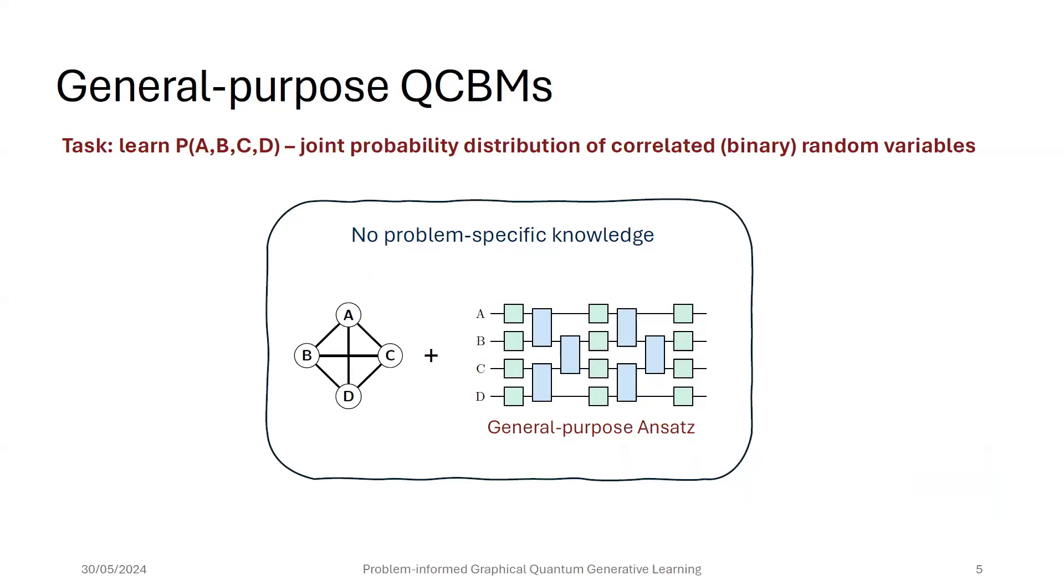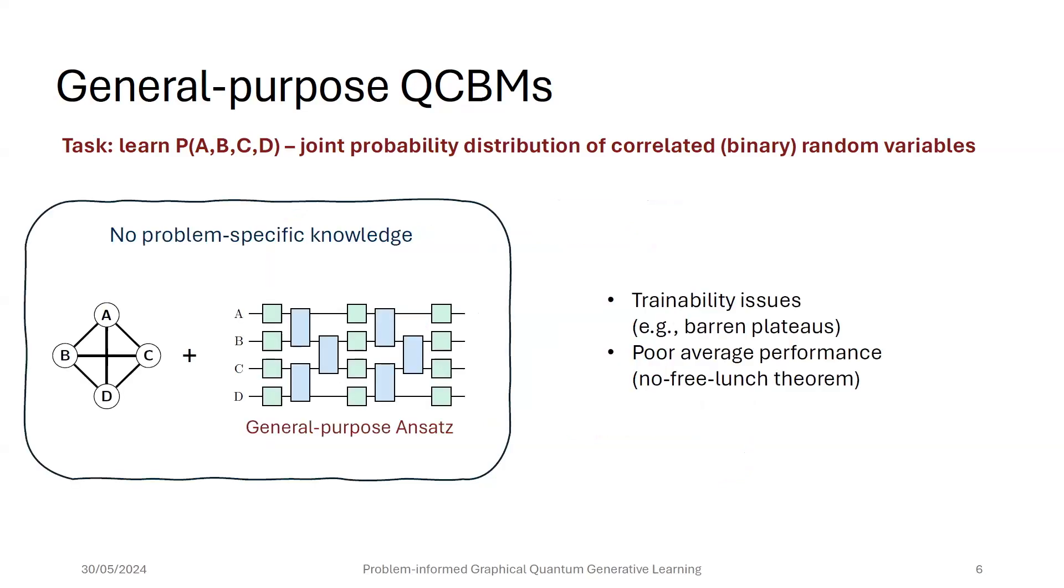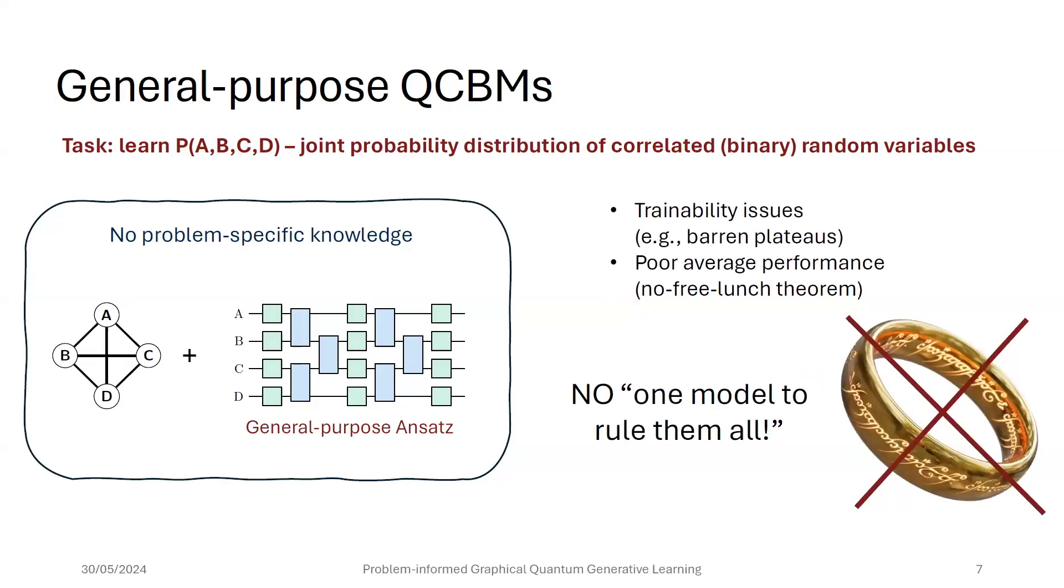Now, in general, these born machines use a general-purpose ansatz, which are very powerful in the sense that they are expressive, they can reach wide corners of the Hilbert space, but they face several challenges, which are connected to their trainability, like barren plateaus, so places in the loss landscape where the gradients vanish exponentially, or poor local minima. We can see all these things as a consequence of the no-free-lunch theorem, which naturally translates to quantum machine learning, which basically states that these general-purpose models will have a poor average performance. So the bottom line is that there is no one model to rule them all.